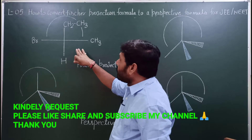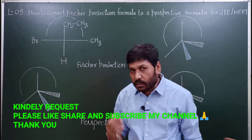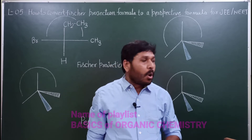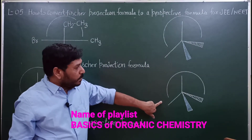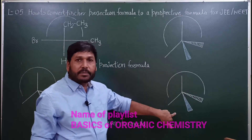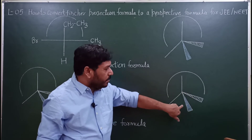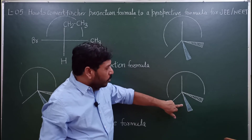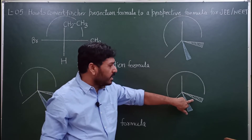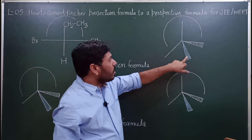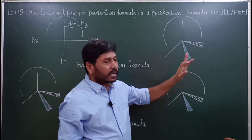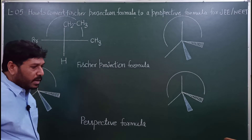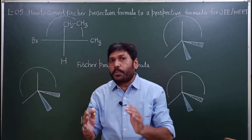This type of formula is the three-dimensional formula. This type of formula has two bonds — the Hatch Wedge and Solid Wedge. इस तरीके से four bond इसमें भी लगे हुए three dimensional formula में और इसे बोला जाता है perspective formula।